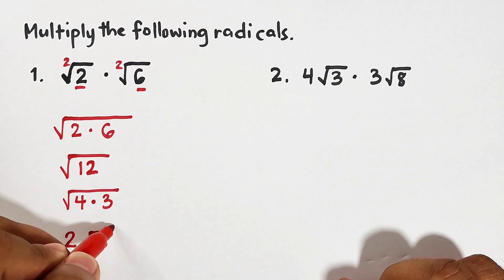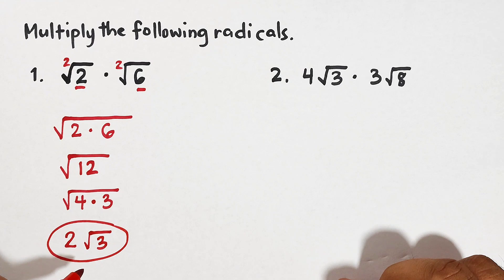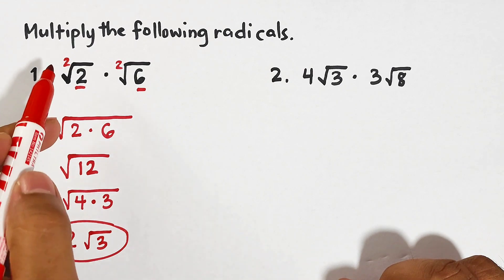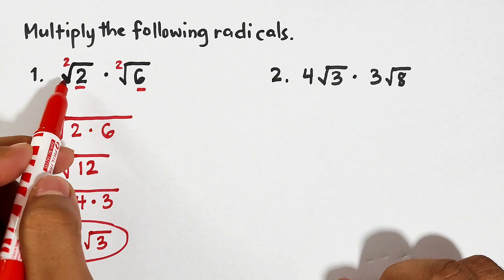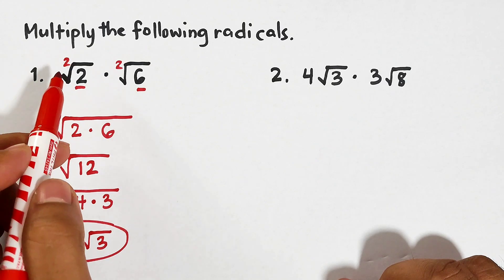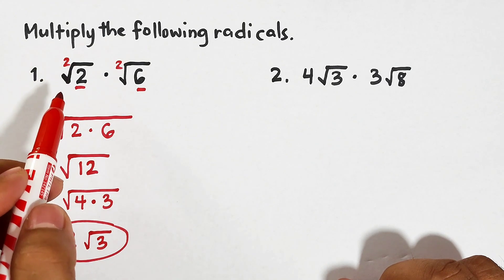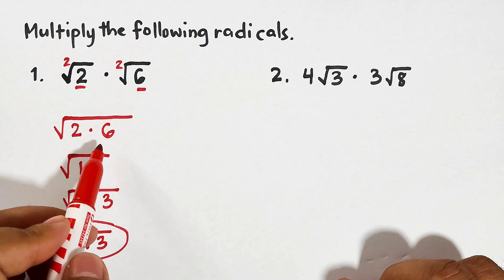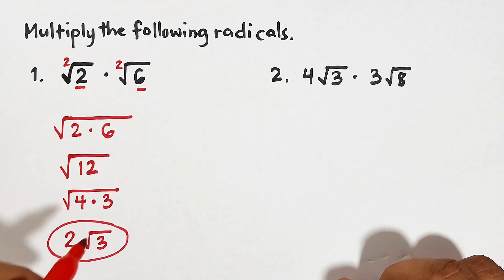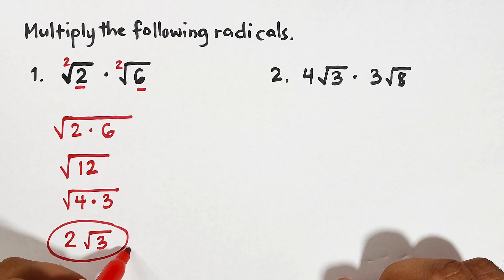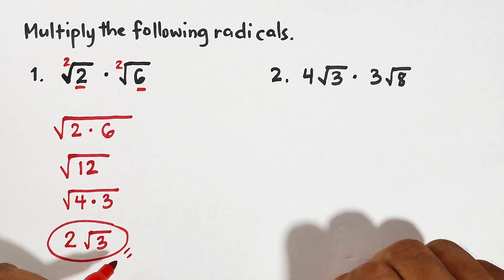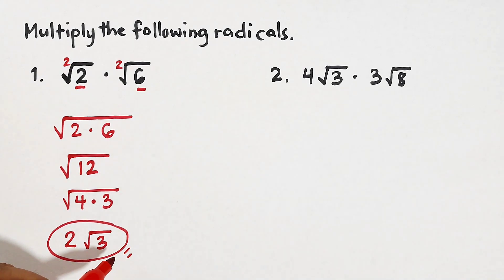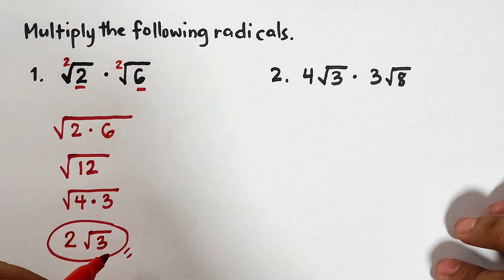And since we don't have the factors of 3, it will remain as square root of 3. And as you can see, this is the final answer for item number one. Again, recap: before multiplying, check if the indices are the same, and then you can simply multiply the radicands.